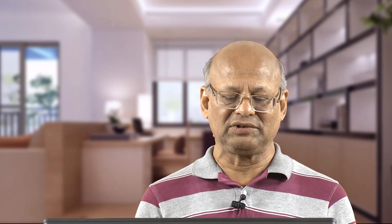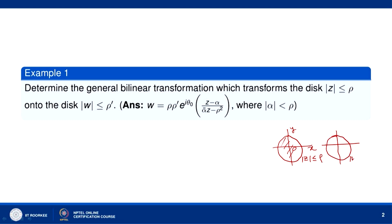Let us first consider the general bilinear transformation which transforms the disk mod of z less than or equal to rho onto the disk mod of w less than or equal to rho dash. We consider the bilinear transformation w equal to (az + b) / (cz + d) where ad minus bc is not equal to 0.